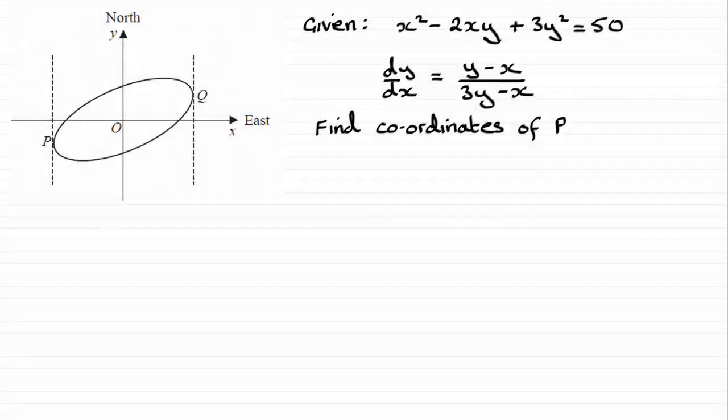Now for this next part we're told that for this curve x squared minus 2xy plus 3y squared equals 50, the points P and Q are furthest west and furthest east respectively. We've already established the gradient in the previous part of the question for any point on this curve, and we've got to find the coordinates of this point P.